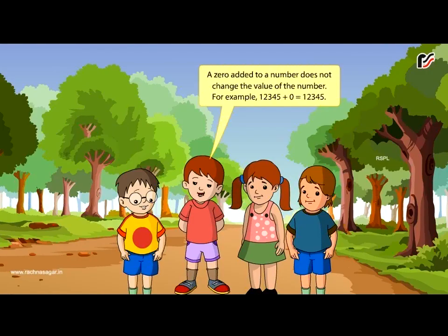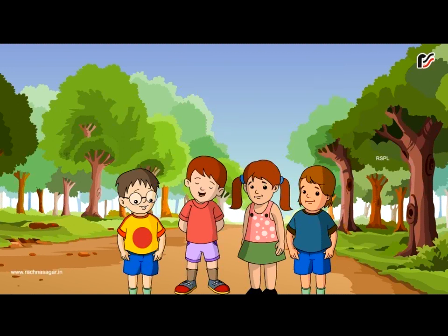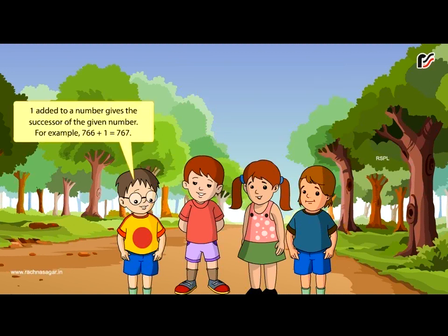Properties of Addition. A 0 added to a number does not change the value of the number. For example, 12,345 plus 0 is equal to 12,345. Also, 1 added to a number gives the successor of that number. For example, 766 plus 1 is equal to 767.